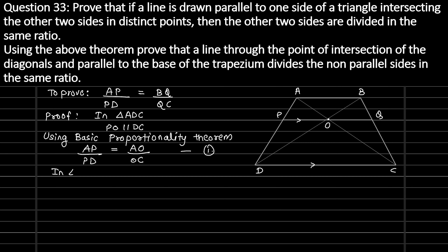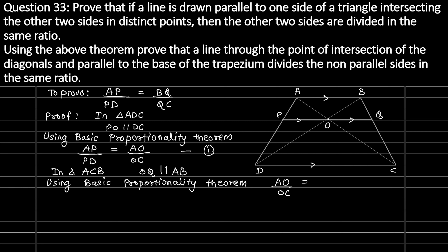Now observe triangle ACB — in this triangle, OQ is parallel to AB. So applying the Basic Proportionality Theorem once again, AO divided by OC equals BQ divided by QC. Mark this as equation 2. From equations 1 and 2, we can conclude that AP divided by PD equals BQ divided by QC.